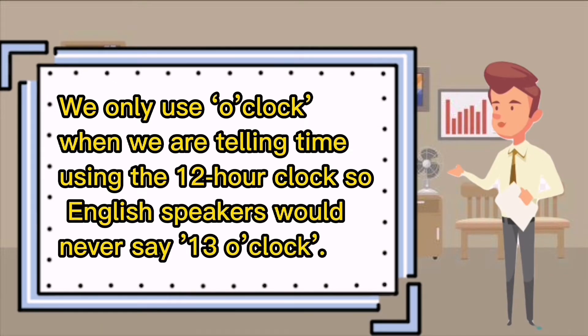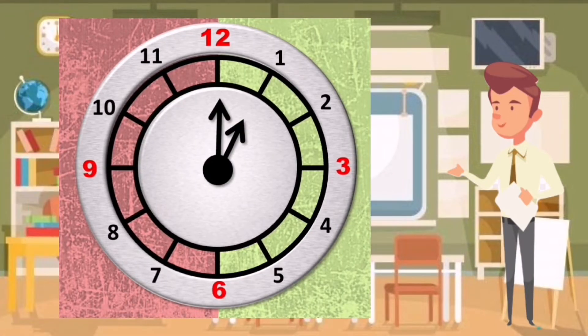This clock has a long hand and a short hand. The short hand tells us the hour and the long hand tells us about the minutes and how much time has passed after the hour.